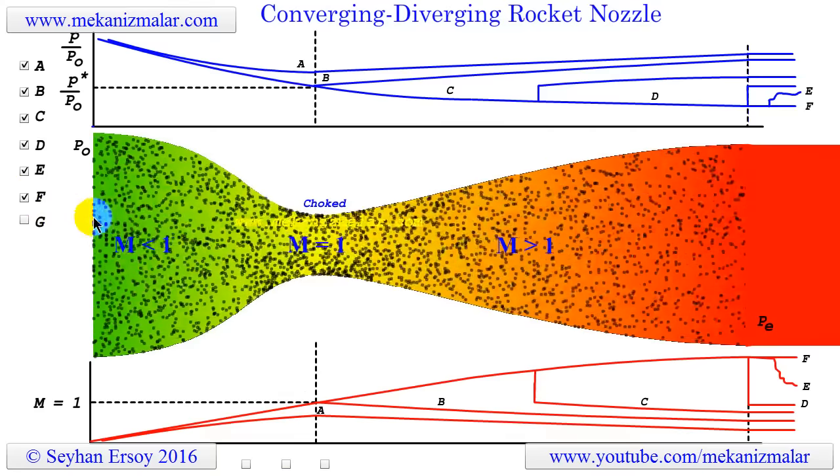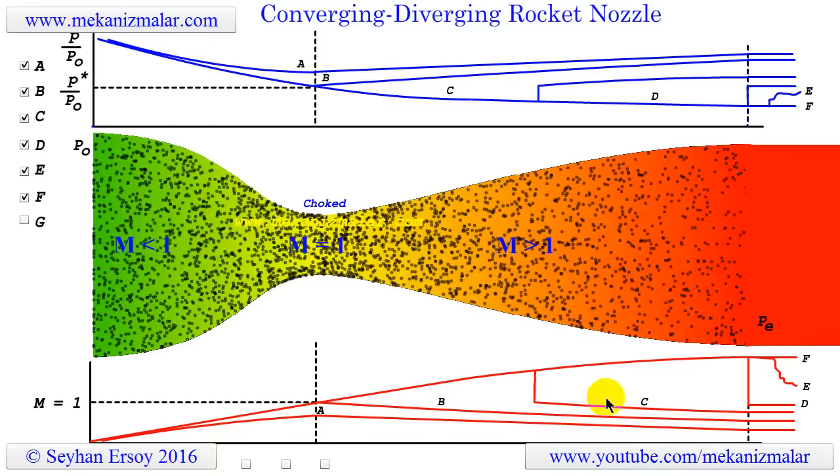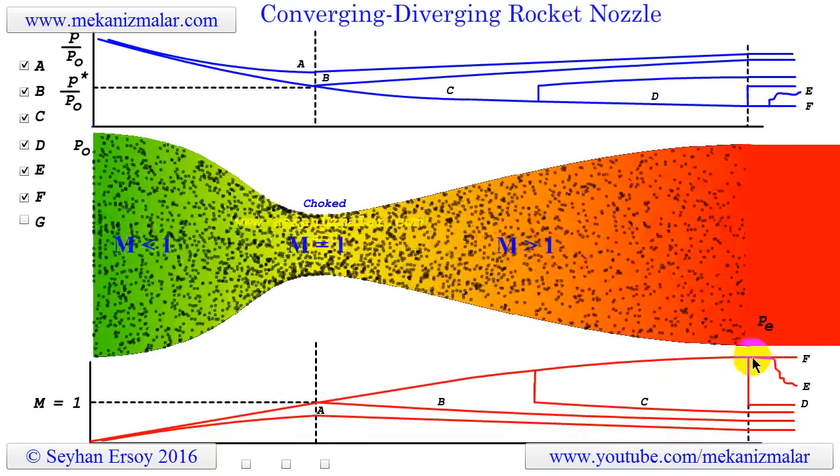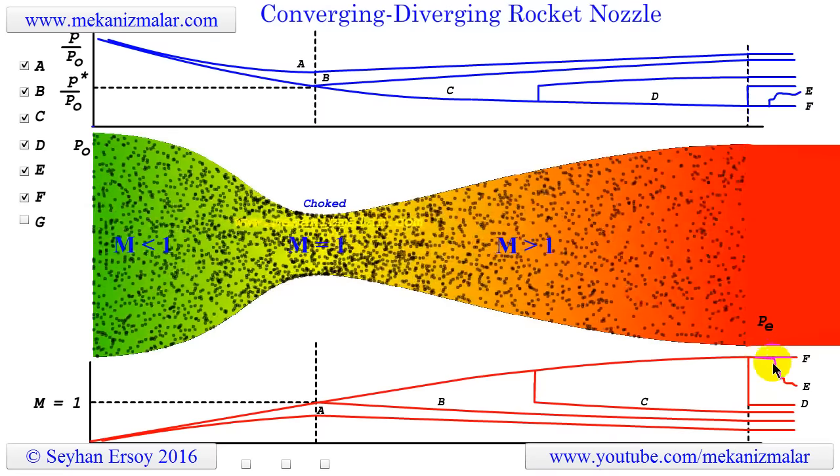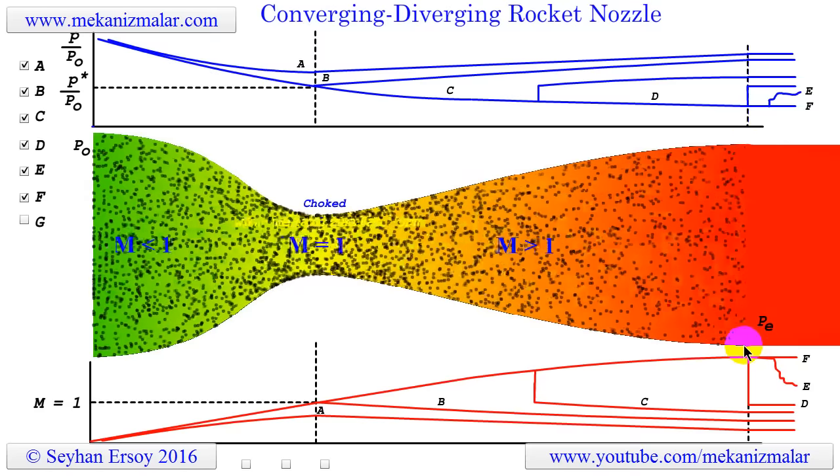For case F, the exit pressure is reduced even further, and the rocket nozzle works in its optimum efficiency. There is no shock wave formation in the flow, and the gas flow gets out from the nozzle almost at the same diameter as the diameter of the exit nozzle.